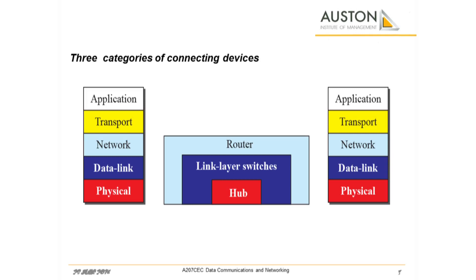Hosts and networks do not normally operate in isolation. We use connecting devices to connect hosts together to make a network, or to connect networks together to make an internet. Connecting devices can operate in different layers of the internet model. We discuss three kinds of connecting devices: hubs, link layer switches, and routers.